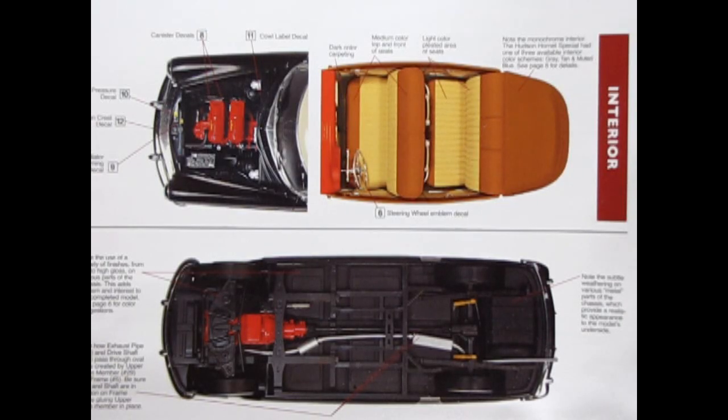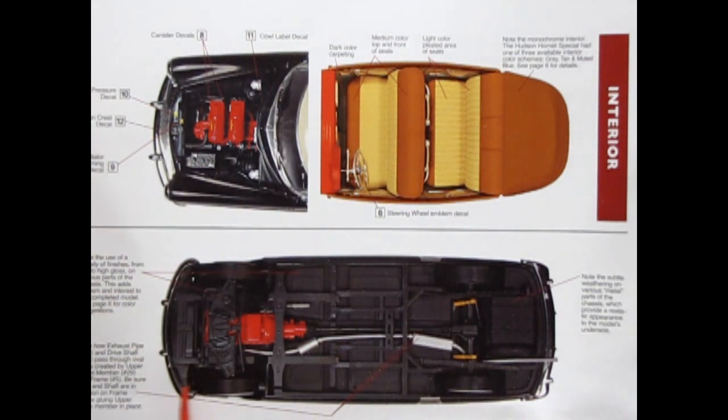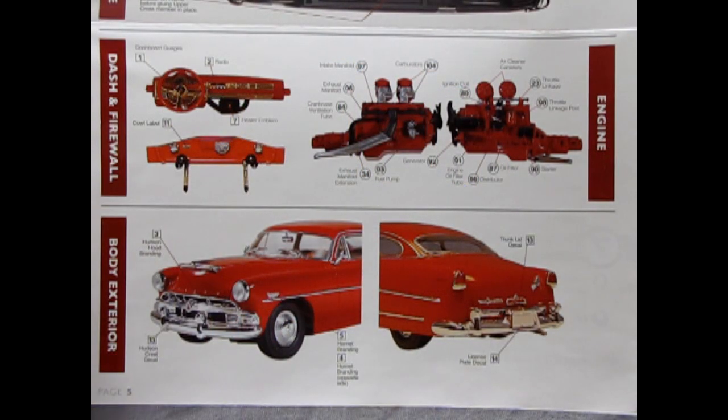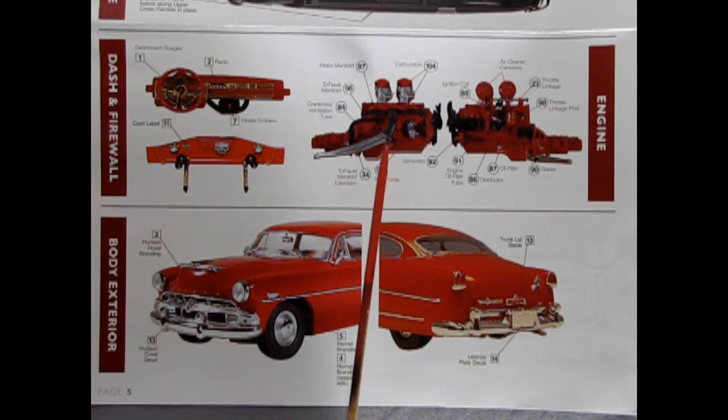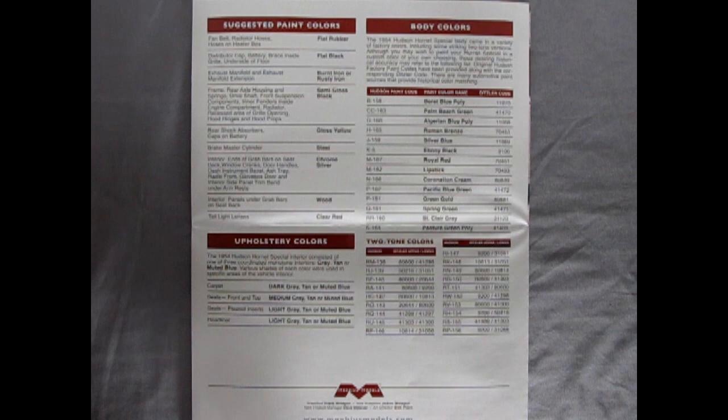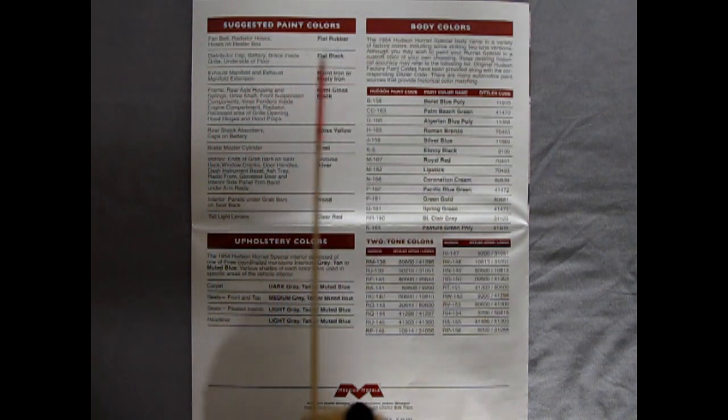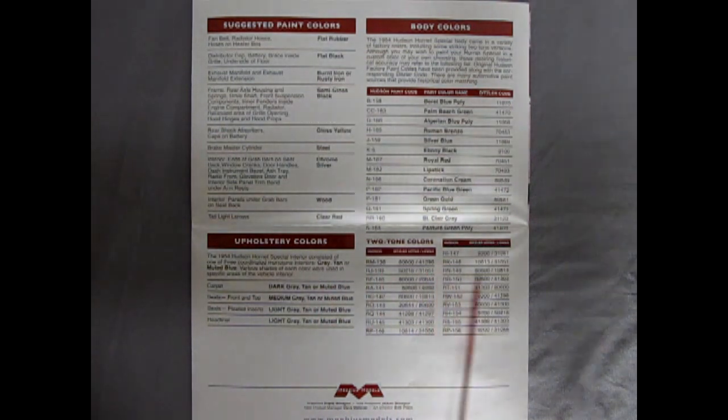Mobius includes these really cool color sheets which show underneath the hood and how to paint your engine as well as some suggestions for painting the interior and the entire undercarriage. And they don't stop there because here's a painted up dashboard and the firewall and cowl and then both sides of our engine as well as up in the front and the rear of the car. The back of our instructions includes suggested paint colors, body colors, upholstery colors and two-tone body colors.